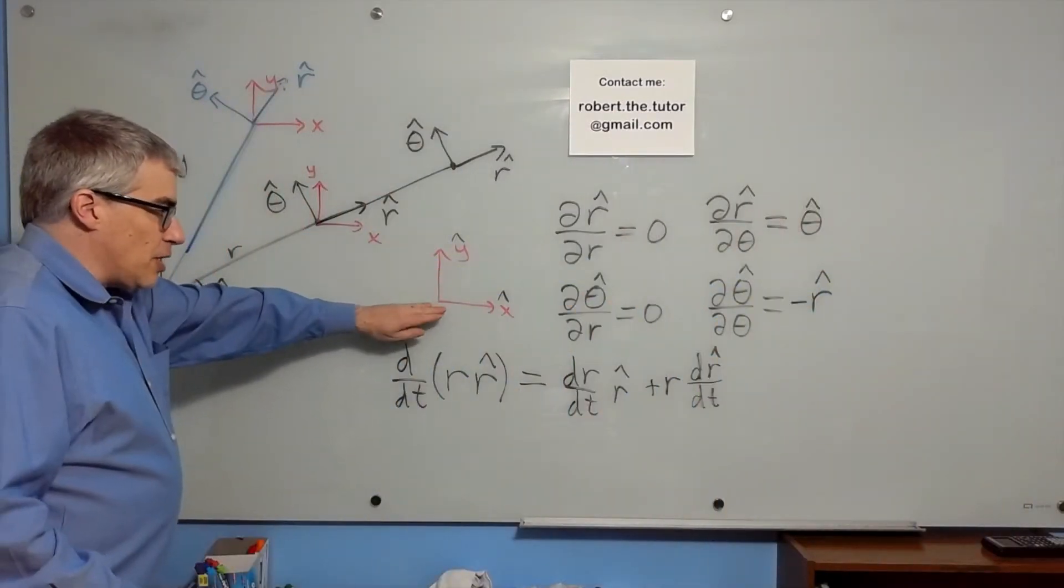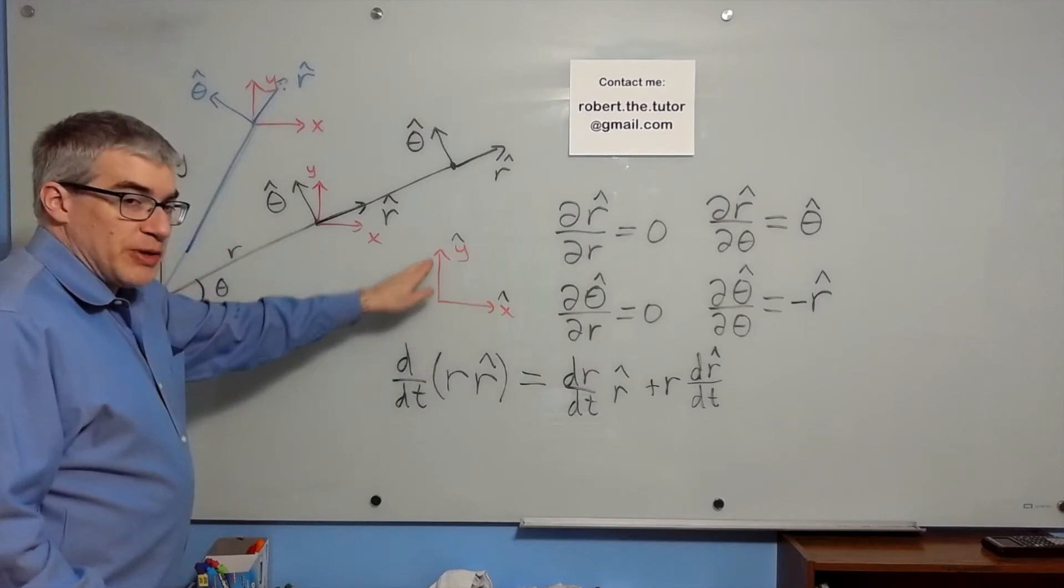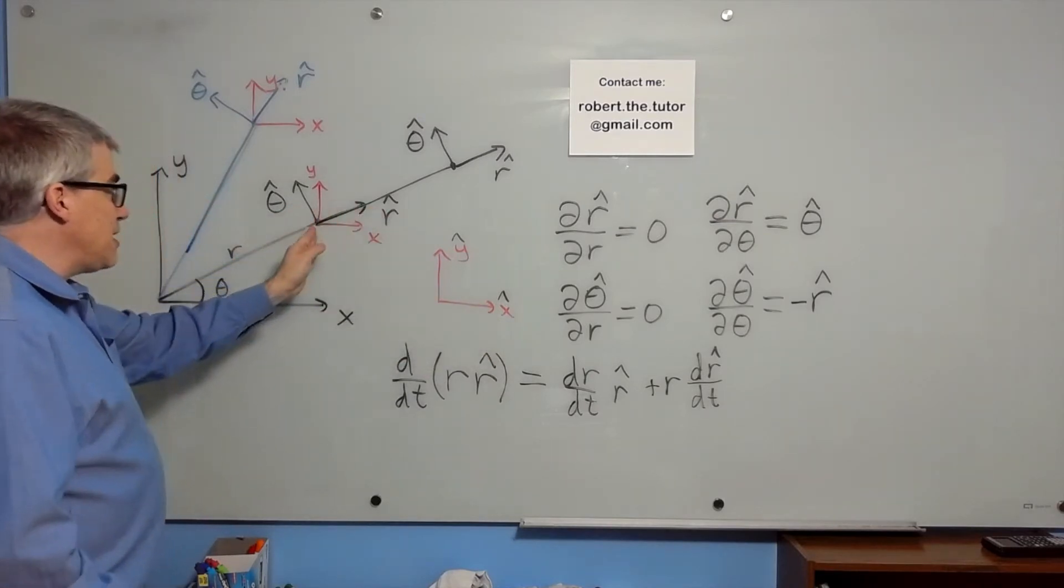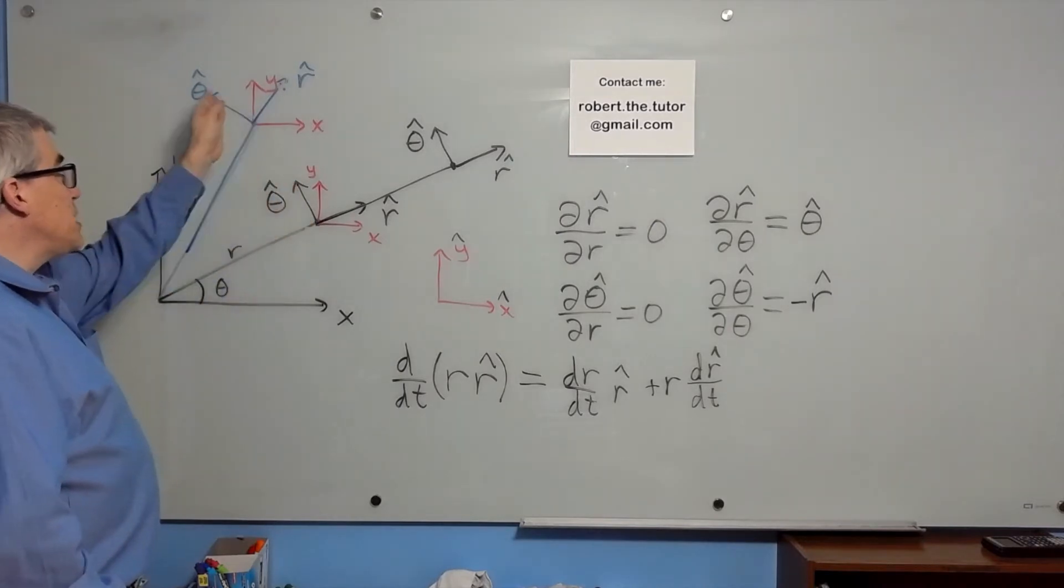If you're in this location, r-hat would point that way and theta-hat would point that way. If you're in this location, r-hat points this way and theta-hat points that way. If you're up here, r-hat points this way, theta-hat points that way, they're changing.